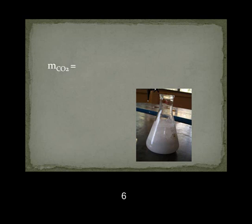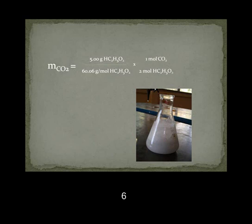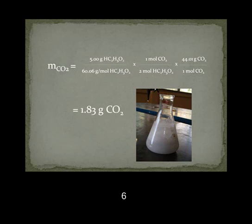To determine the mass of carbon dioxide produced, we must divide the starting mass of acetic acid by its molar mass to find the starting number of moles of acetic acid, then multiply by the mole-to-mole ratio of carbon dioxide and acetic acid to find the number of moles of carbon dioxide produced. Finally, multiply by the molar mass of carbon dioxide to find the mass of carbon dioxide produced, which is 1.83 grams.